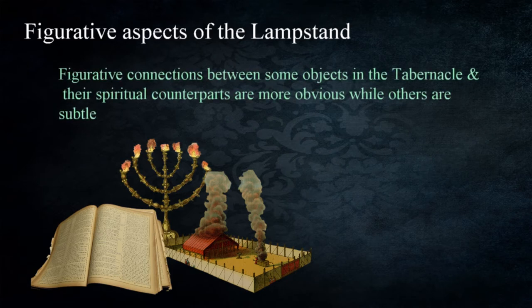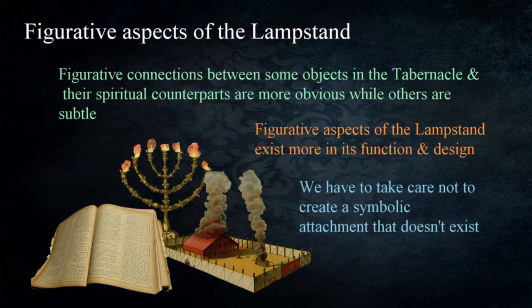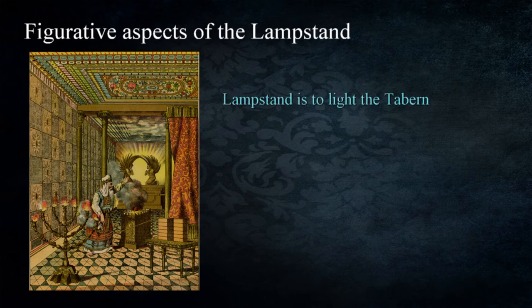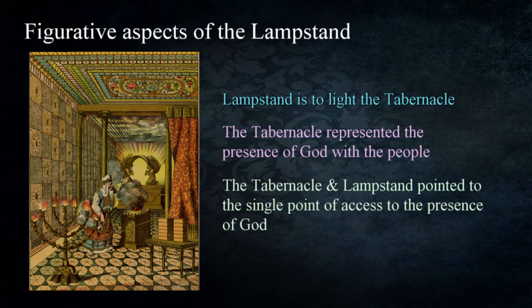Figurative connections between some objects in the tabernacle and their spiritual counterparts are more obvious, while others like the lampstand are more subtle. Examining the lampstand as a figure, the connections exist between its function and design rather than so much the physical object itself. We must take care not to create symbolic attachments that don't exist. The first thing that stands out is that the lampstand is to light the tabernacle — which as a whole represented the presence of God with the people — with a successive layering approaching the single point where God manifested himself. The interior would be very dark, and in order for the priests to perform their duties they needed light. From a practical standpoint, the lampstand was the means to supply that necessary illumination.